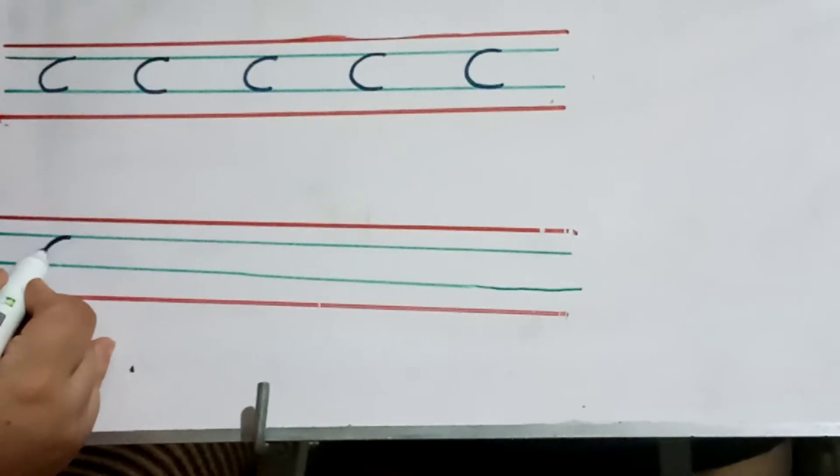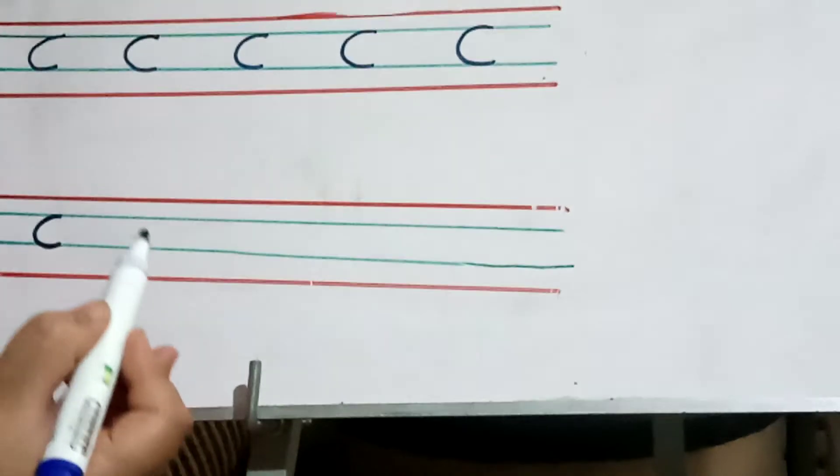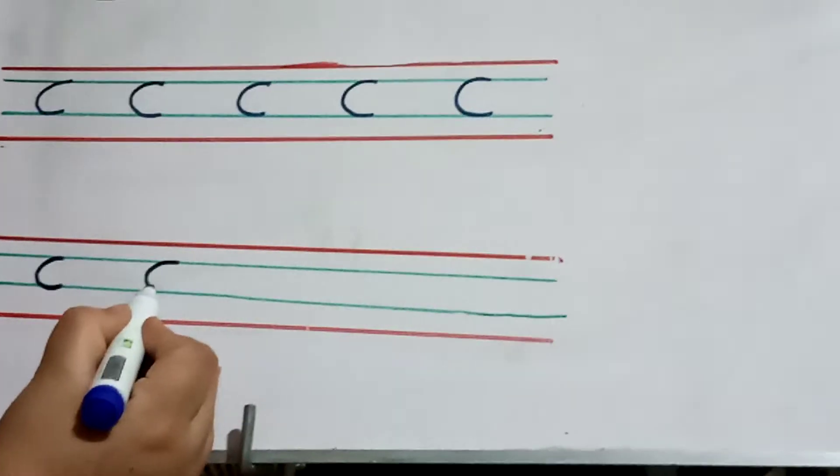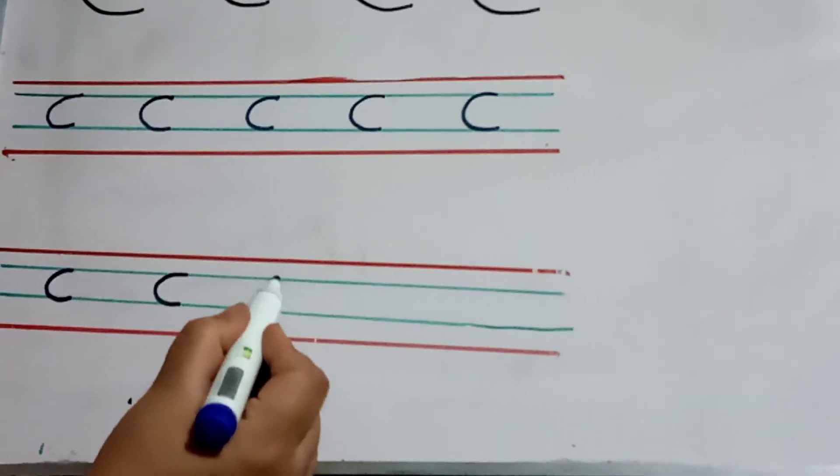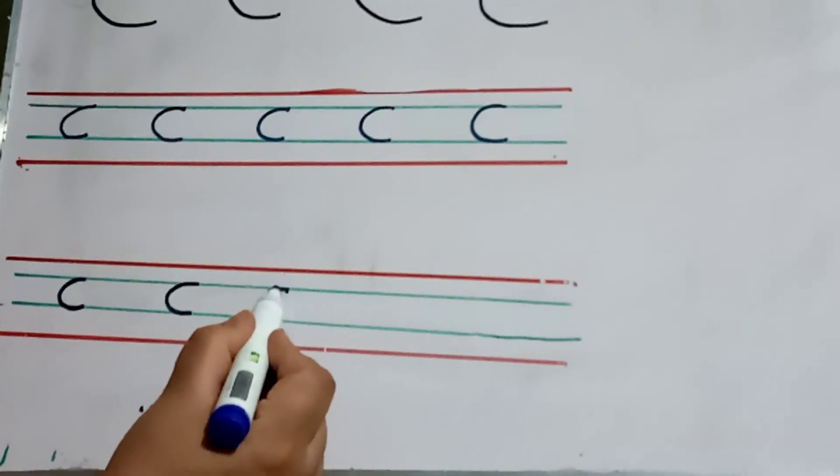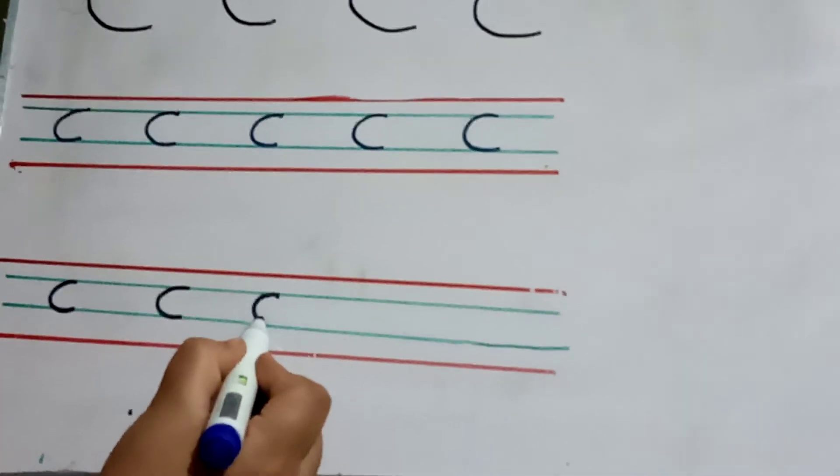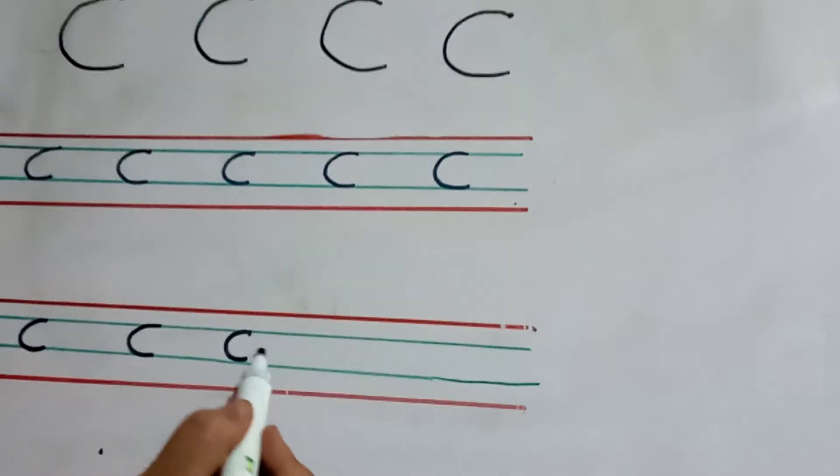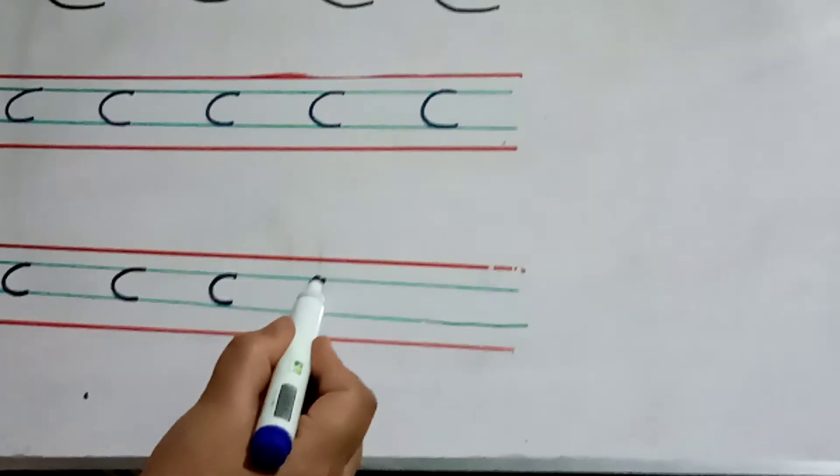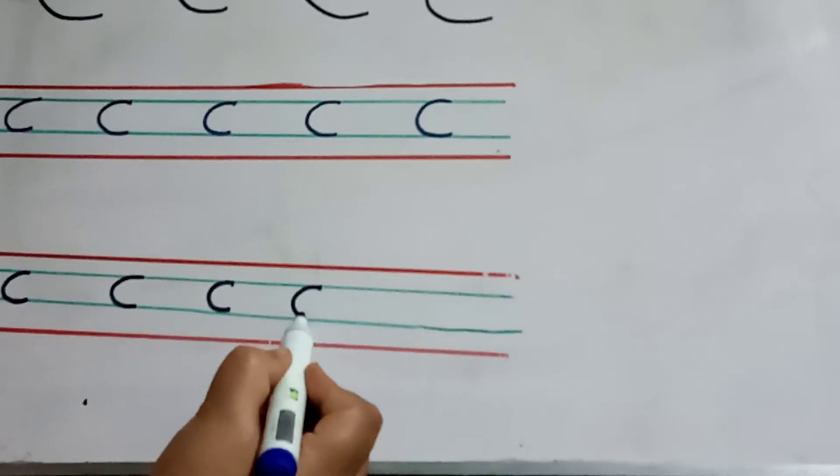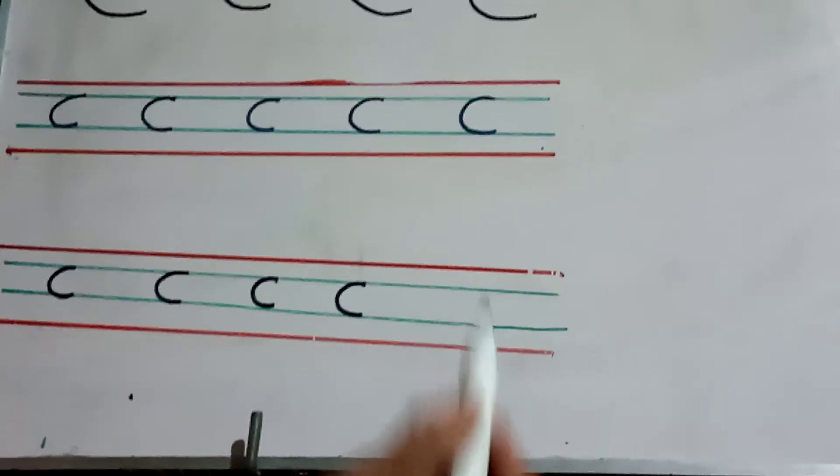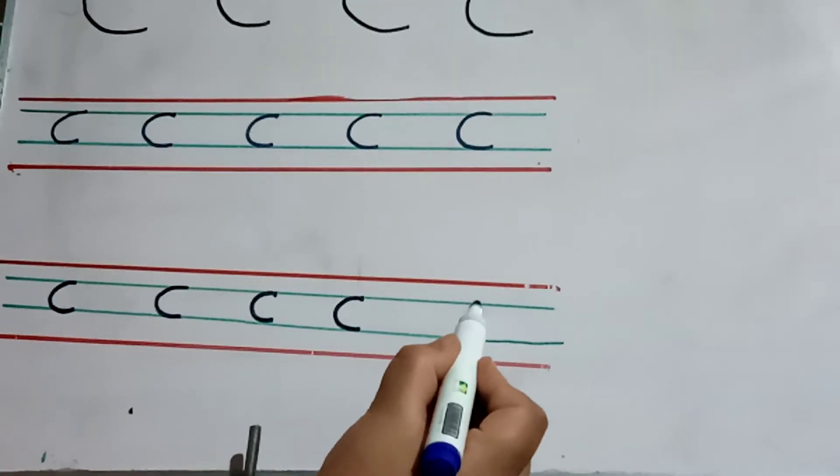Start from here, come down, C. It's your letter C. Start from the second line, make a curve and come to the third middle line. Start from here, make a curve and come to the third middle line, C. It's your letter C.